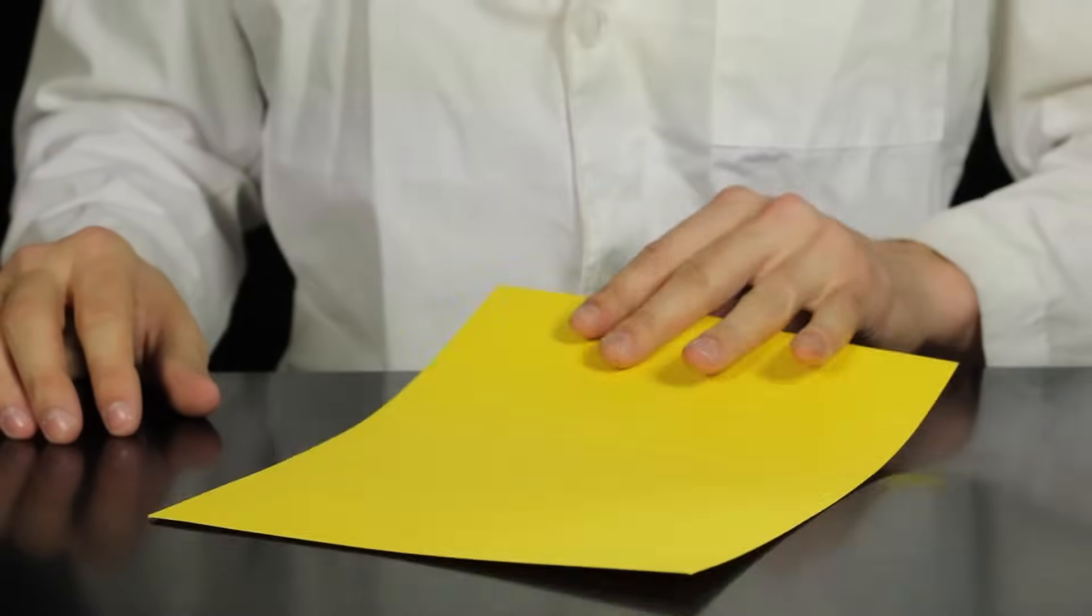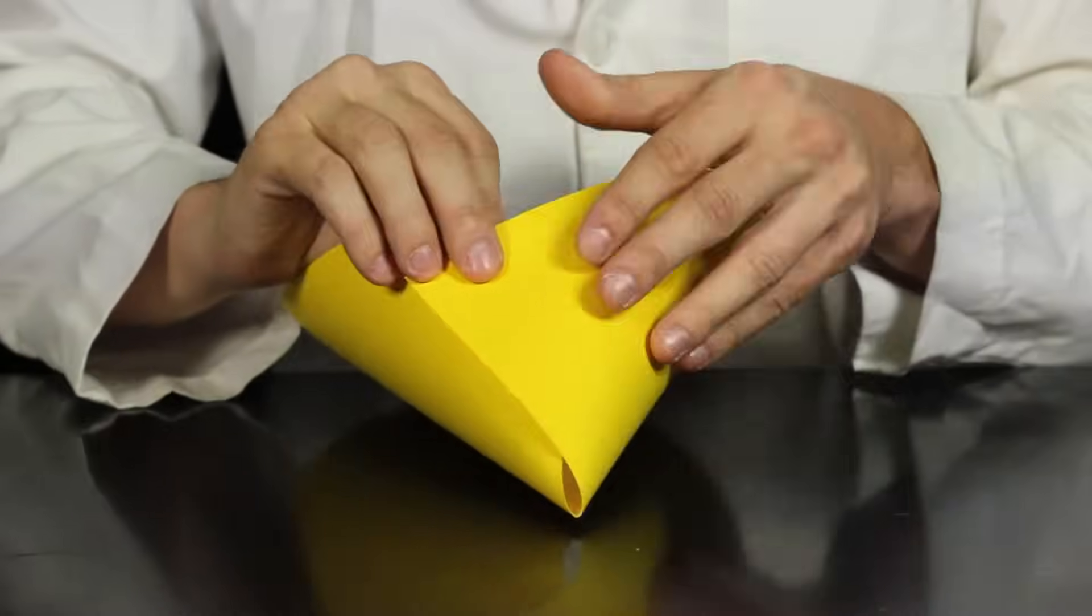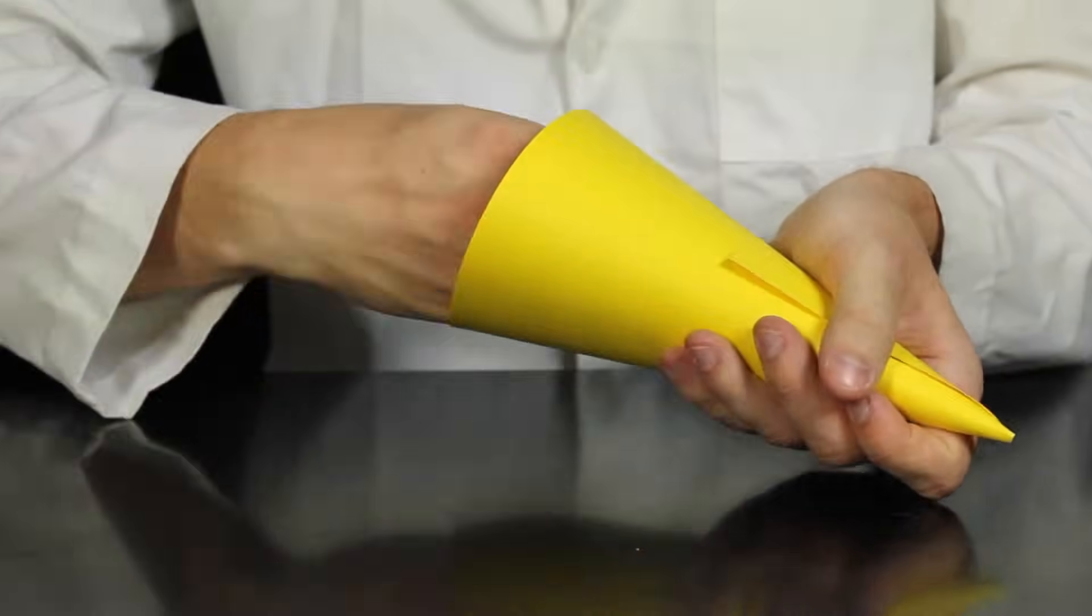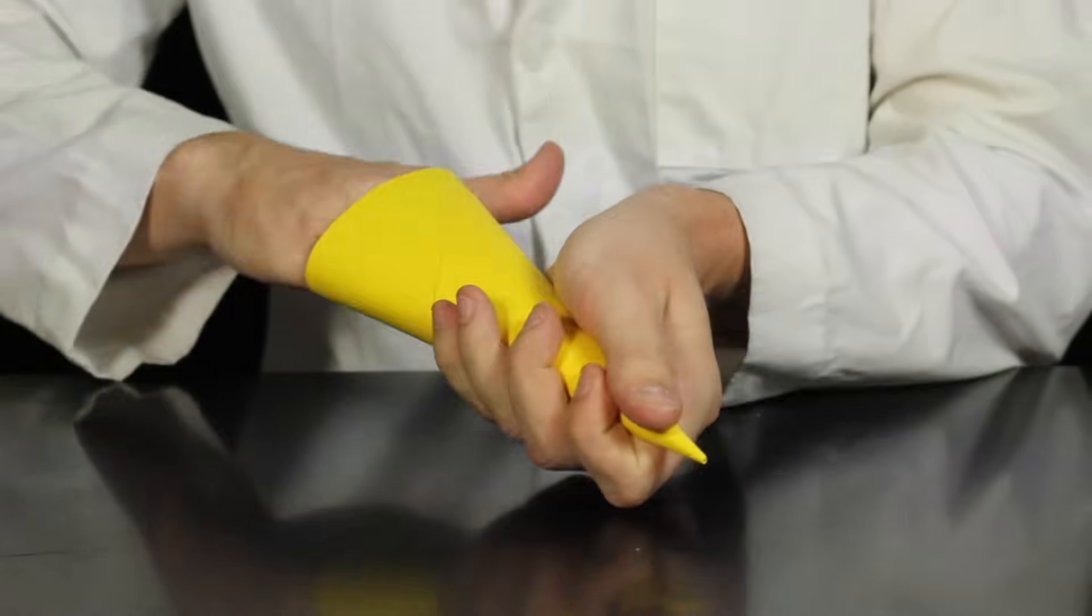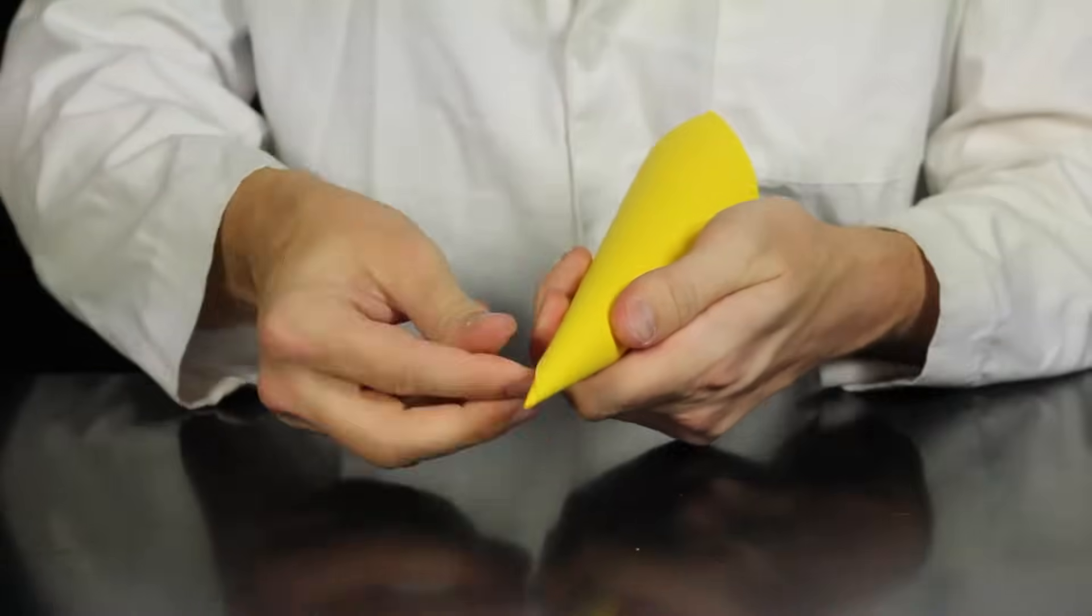After you've completed sealing up the end of your rocket, the next step is to choose a nose cone. There are a lot of different types of nose cones you could choose, but for this demonstration we're going to use a pointed nose cone.